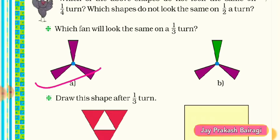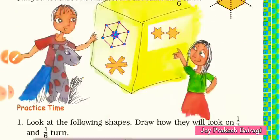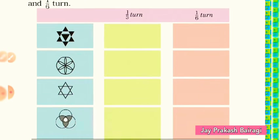For one third turn, what we have to do is divide the shape into three equal parts — just as the blades are. Each part is known as its one third turn. It is just like one sixth turn. Now come to the practice time and let's find the one third turn of these pictures.